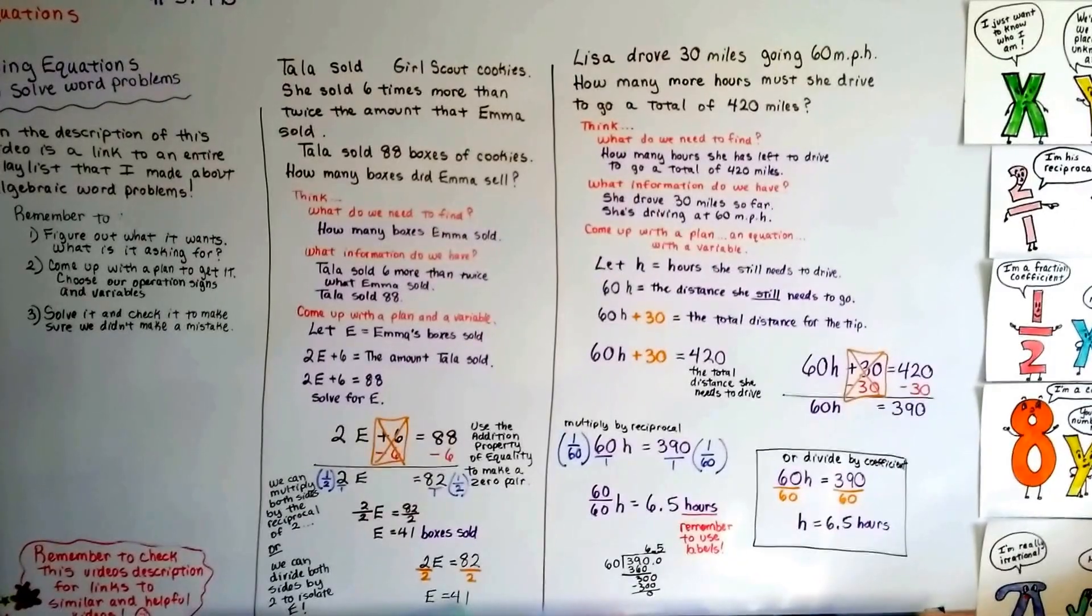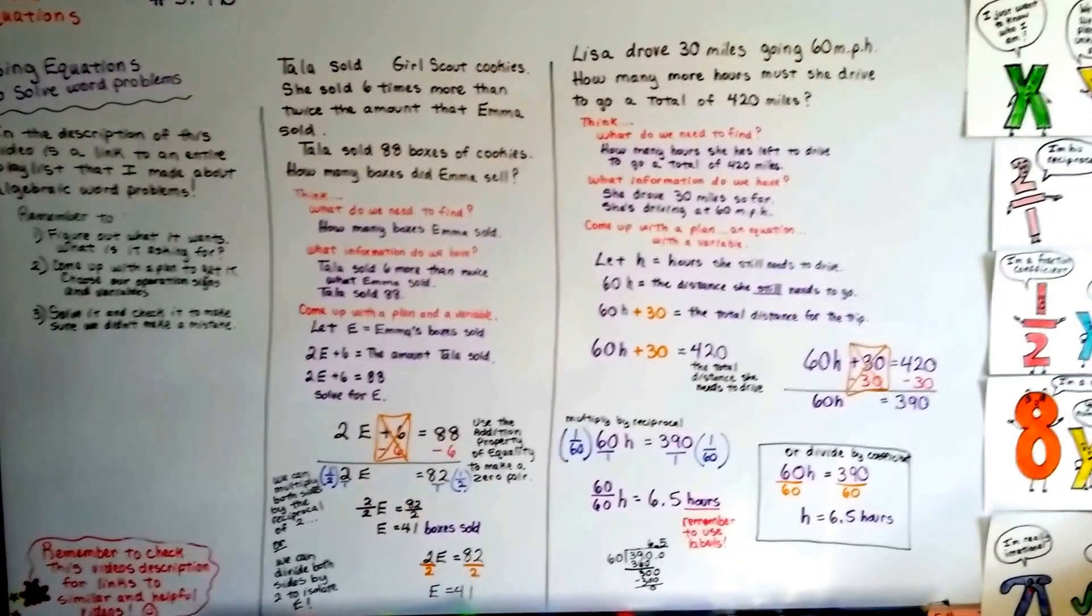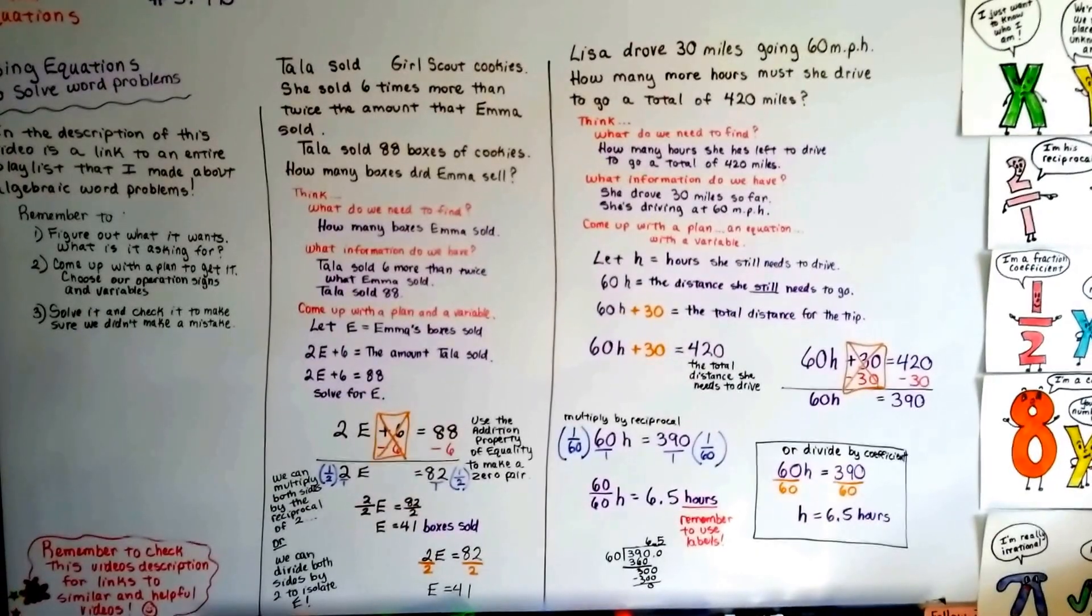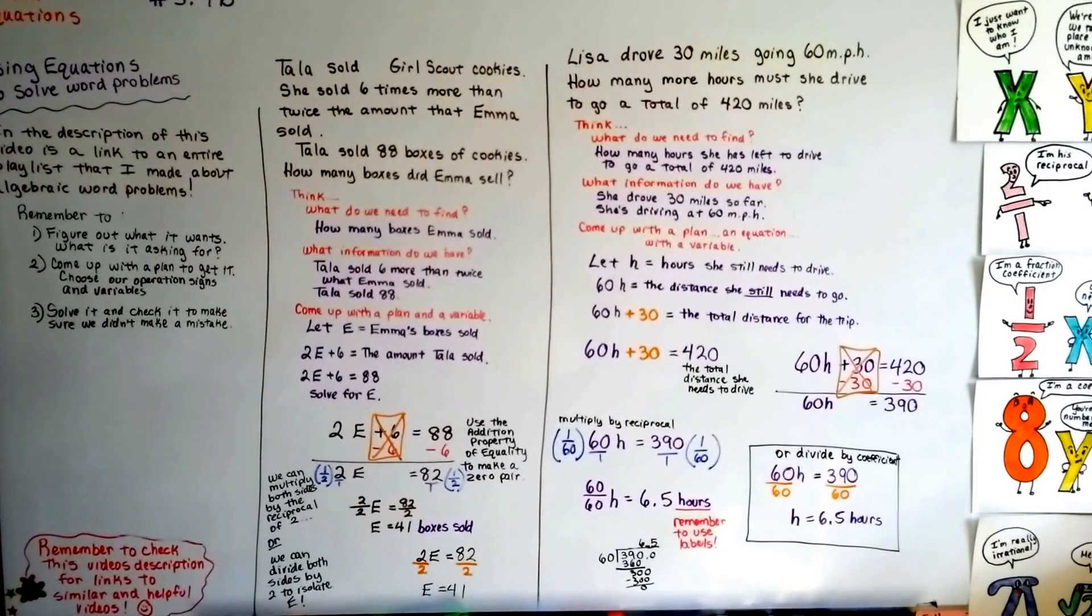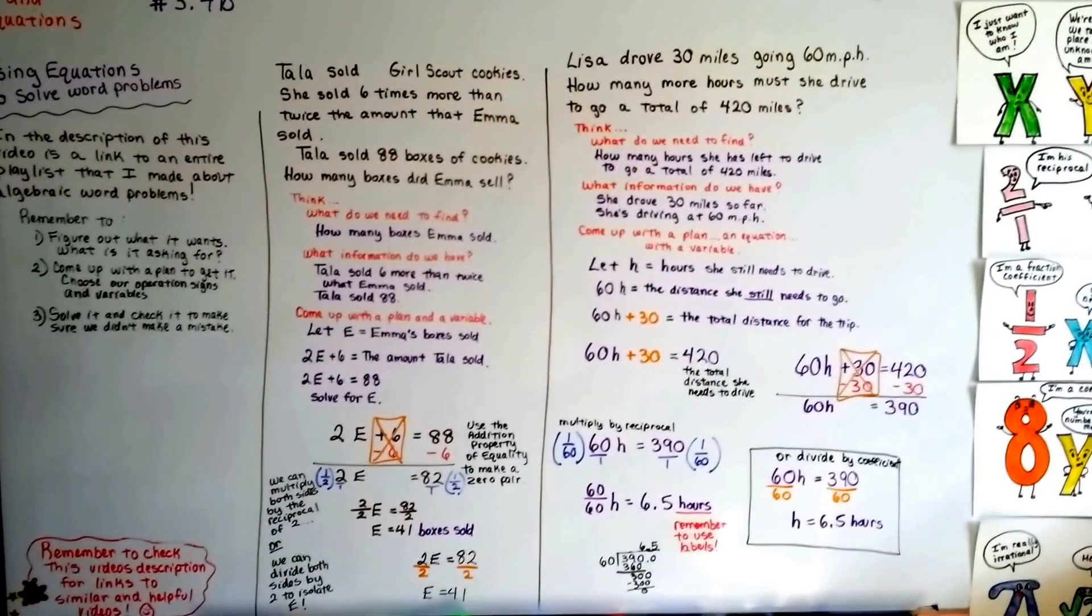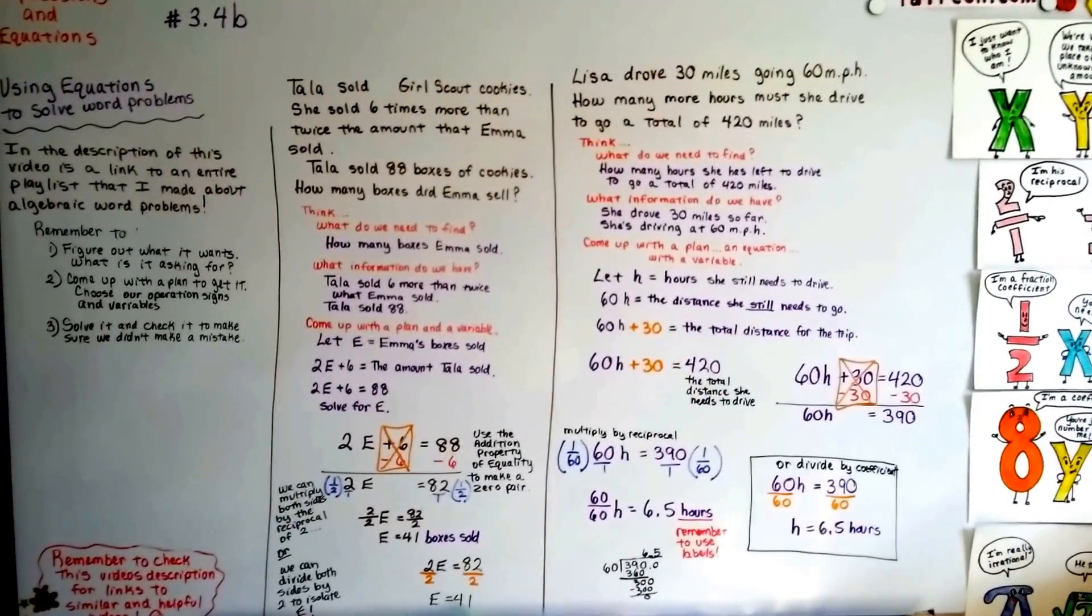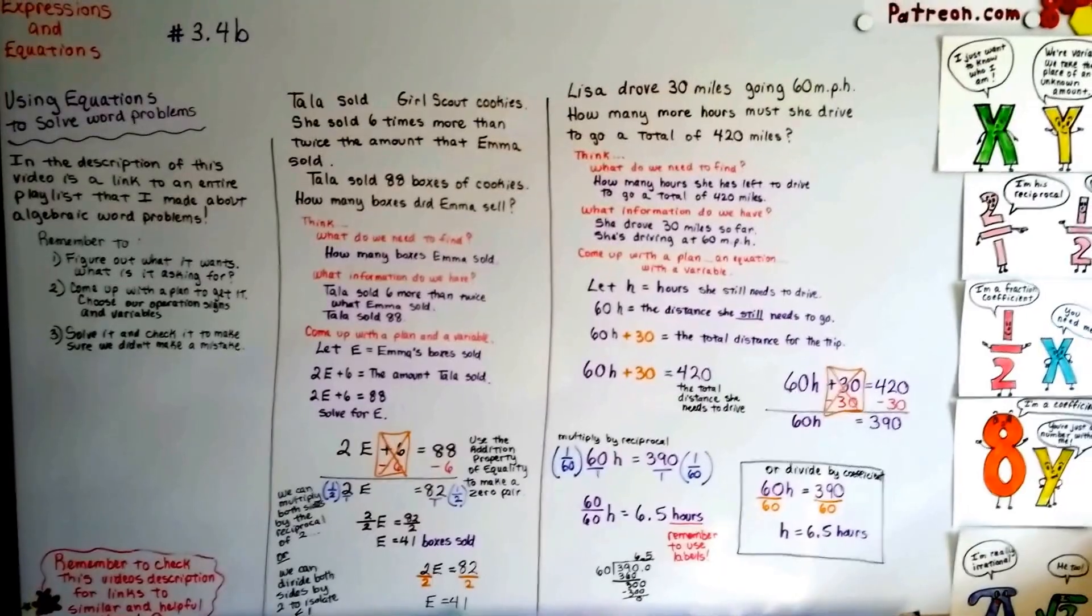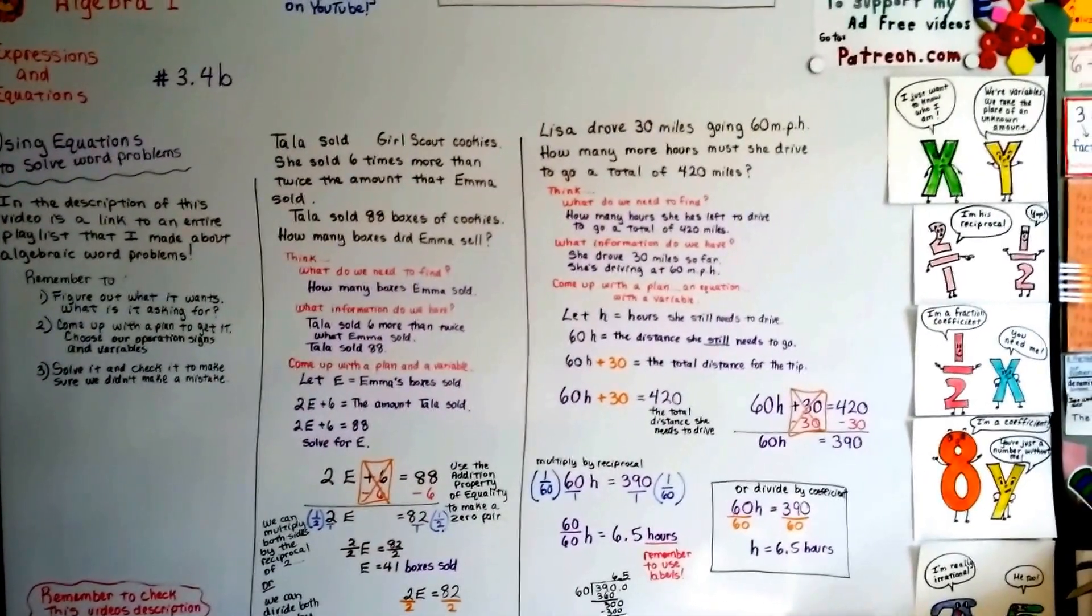In 3.4C, we're going to talk about word problems that have rates in them. Like if Bob worked five hours to complete a job and his buddy worked four hours to complete the same job, you know, a rate word problem. And we'll do one or two of those real quickly in the next video 3.4C. I hope I'll see you there. I hope you're doing okay. I hope you have a great day. Bye.